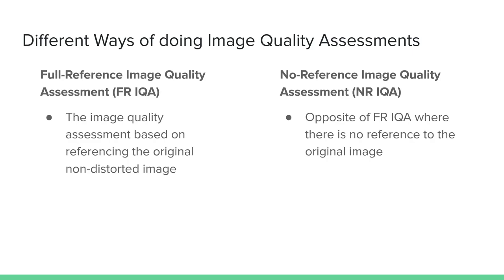Back to the scenario: when working with no reference image quality assessment, there is no reference image — meaning there is no original image, and you are only looking at the changed image. Even with the human eye, it would be extremely difficult to tell if the image you are looking at is distorted. This translates to computer vision models as well, meaning no reference image quality assessment is one of the hardest problems in all of image quality assessment.